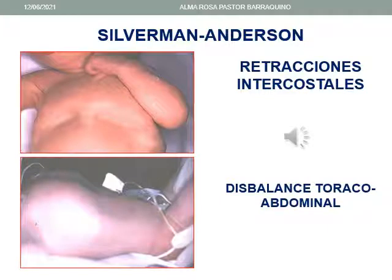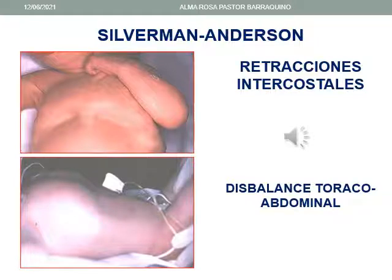En la fotografía superior izquierda se aprecia una marcada retracción intercostal. En la fotografía inferior izquierda se aprecia también un marcado disbalance tóraco-abdominal. En ambos casos la valoración en la escala es de 2.